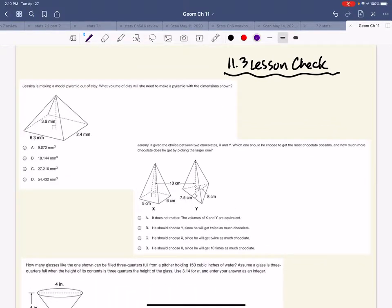Hey guys, we're going to do lesson check 11.3, so let's do it. Jessica made a model pyramid out of clay. What is the volume? Okay, so the volume of anything in the universe is that area of the base times the height, but divide by 3 if it's pointy, if the shape is getting smaller.